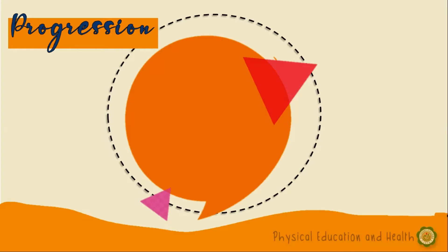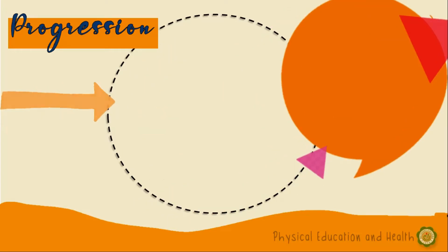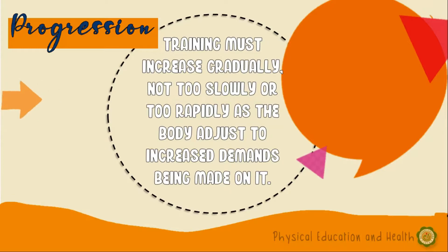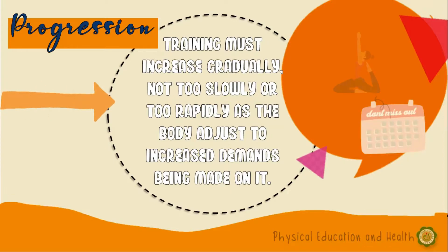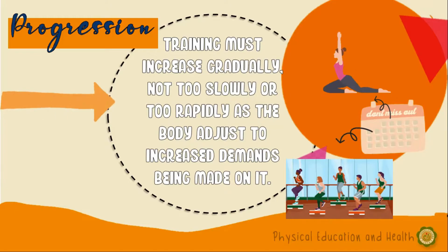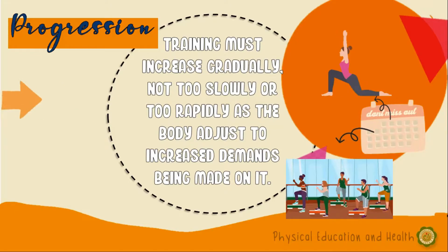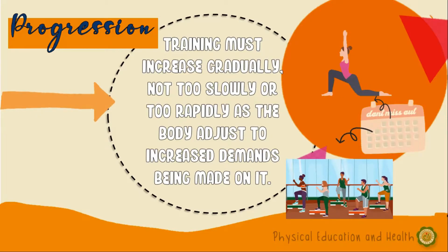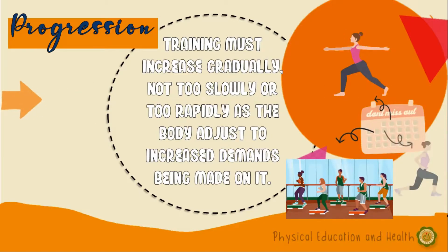Third, progression. Training must increase gradually, not too slowly or too rapidly, as the body adjusts to the increased demands being made on it. For example, you can train once in the first week, twice in the second week, and then three times in the third week.